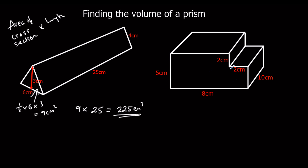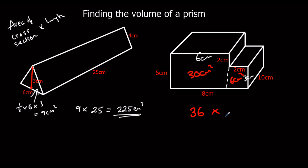For this shape, we need to work out the area of the compound shape at the front. We've got 2 and 8, so 6 centimeters here, and 3 centimeters here. The bigger rectangle is 5 times 6, which is 30 centimeters squared. The smaller one is 2 times 3, which is 6. So the area of the cross section is 36. It goes back 10, so 36 times 10 is 360 centimeters cubed.